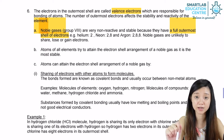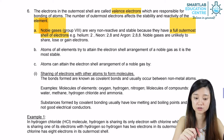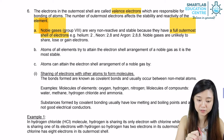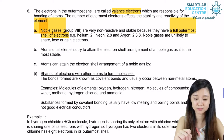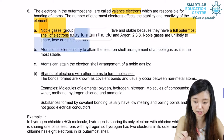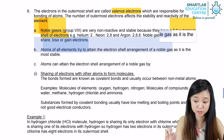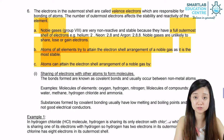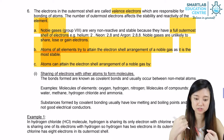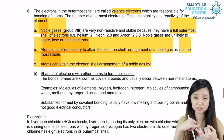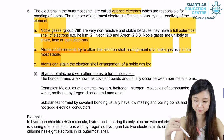Hence, the noble gases are very unlikely to share, lose, or even gain electrons. All the other atoms of all the other elements will try to attain this electron shell arrangement of a noble gas, as it is the most stable state. And that is why all this sharing, gaining, and losing of electrons happens.